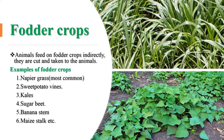The second feed we want to talk about is fodder crops. You must understand that fodder crops are cut and taken to the animal to feed on — animals feed on fodder crops indirectly. Examples of fodder crops include napier grass, kales, sugar cane, sugar beets, maize stalk, banana stem, and many more.